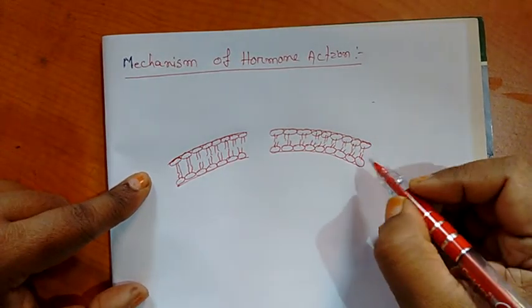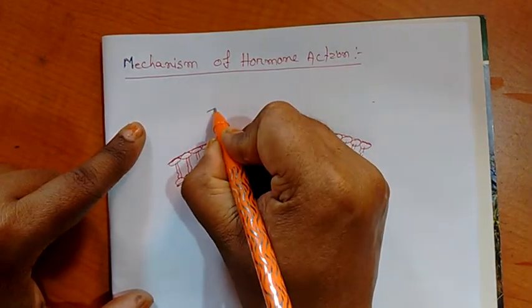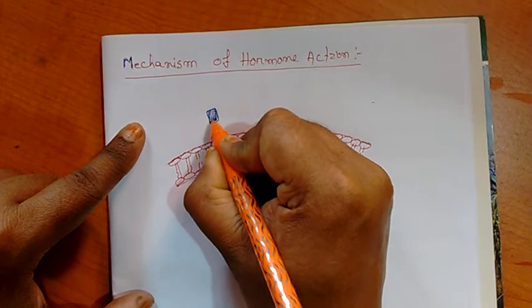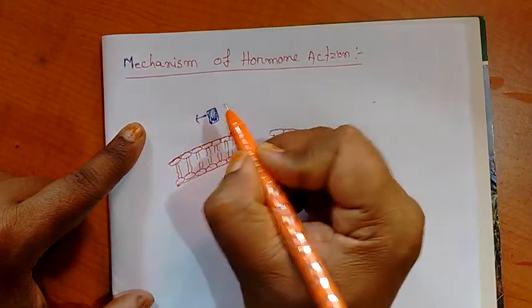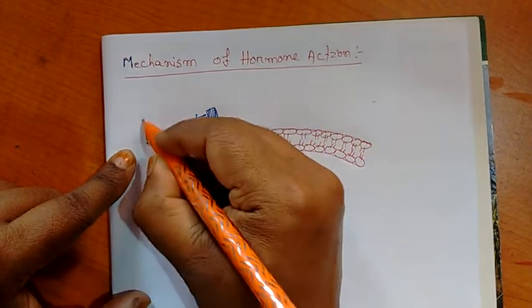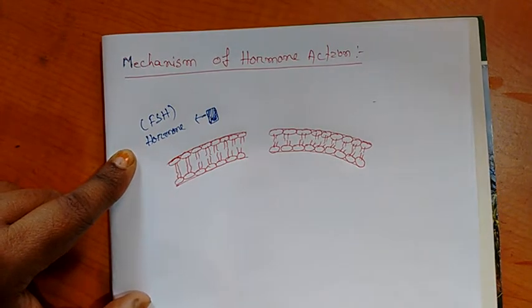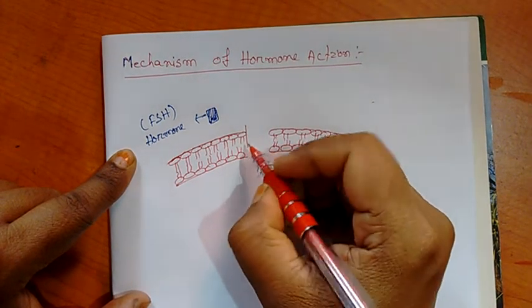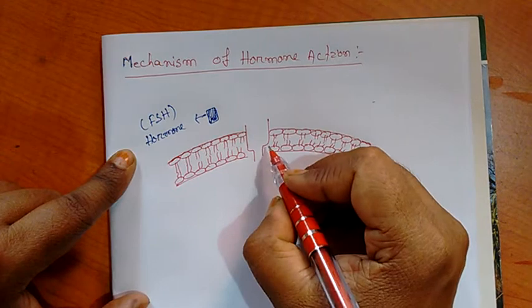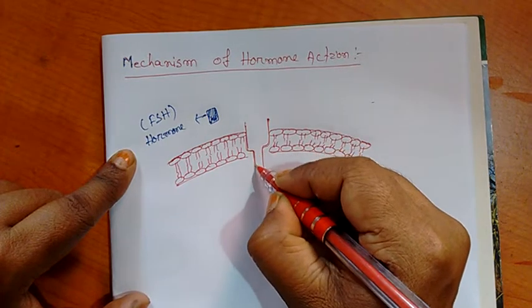This is the cell membrane and here this is one hormone. Let the hormone is FSH, that is follicle stimulating hormone. And there is a receptor molecule present on the surface of the cell membrane of target tissue. Or we consider it ovary, ovarian cell membrane.